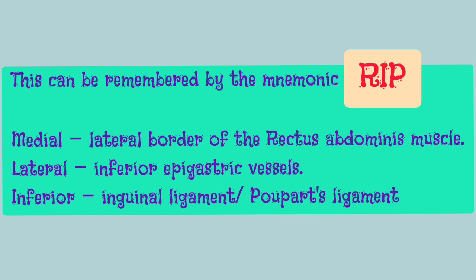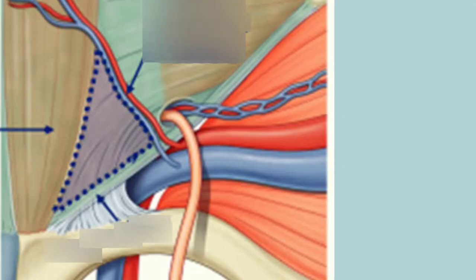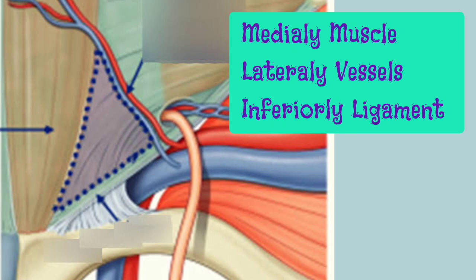Another way to remember it is that the three boundaries are made up of different types of structures — medially by a muscle, laterally by vessels, and inferiorly by a ligament.